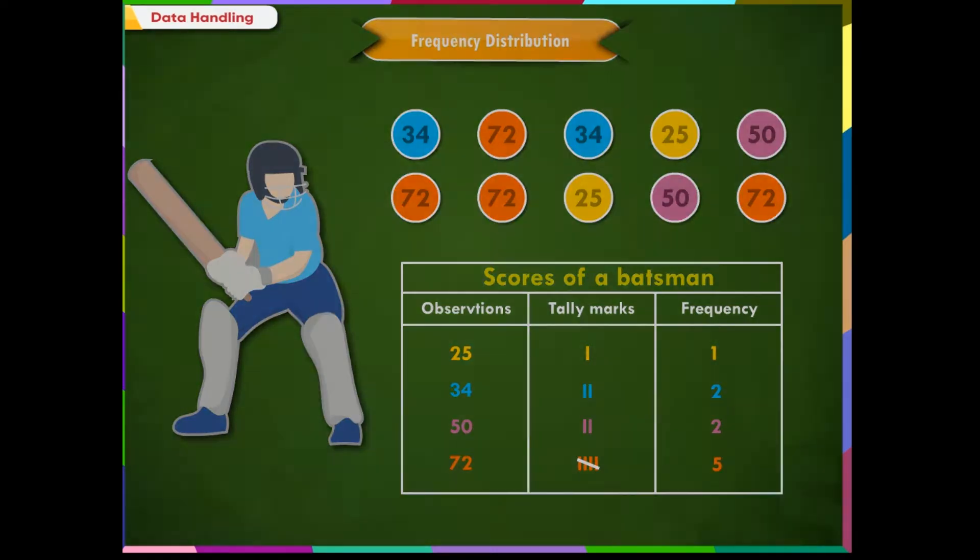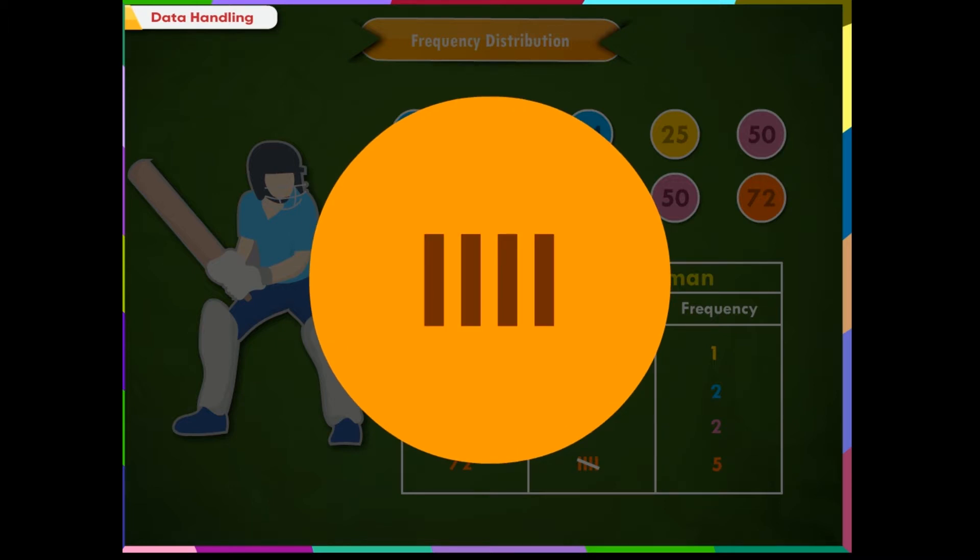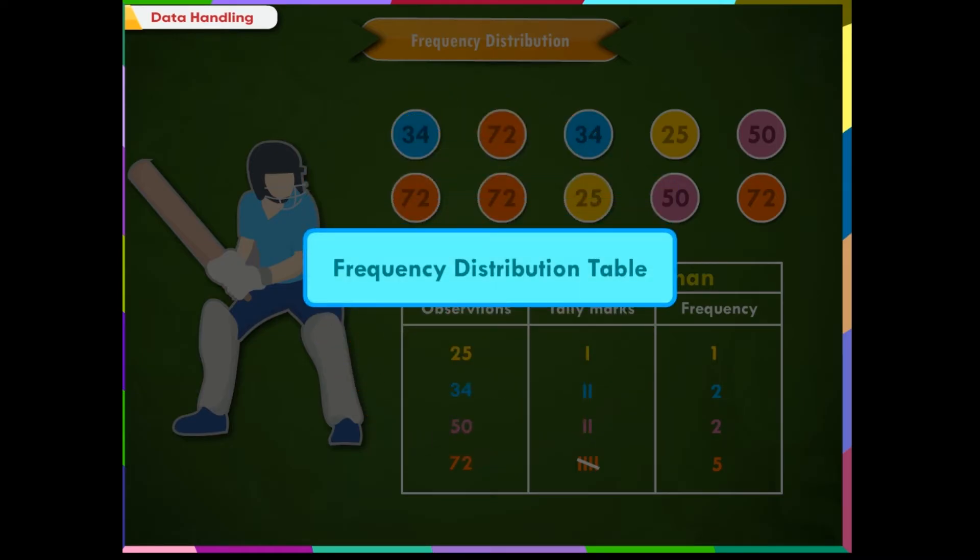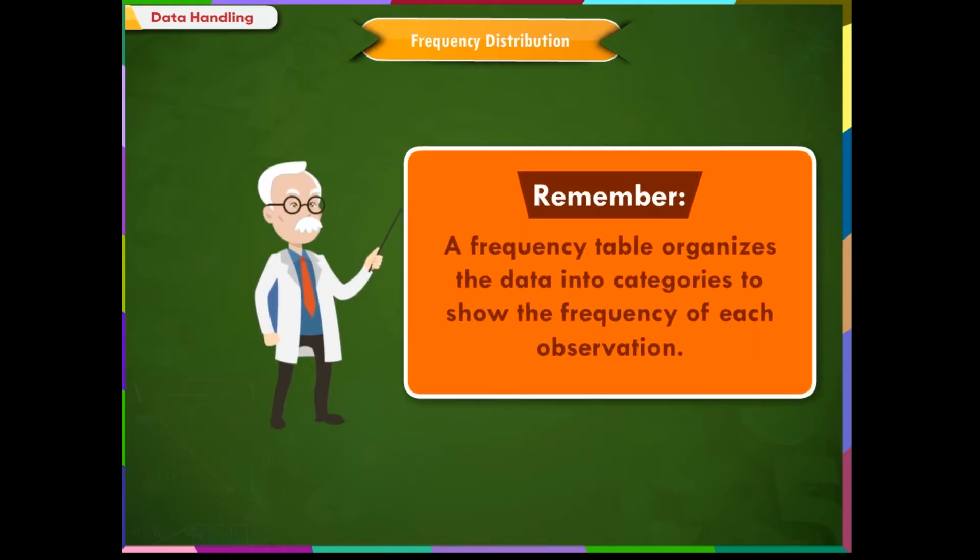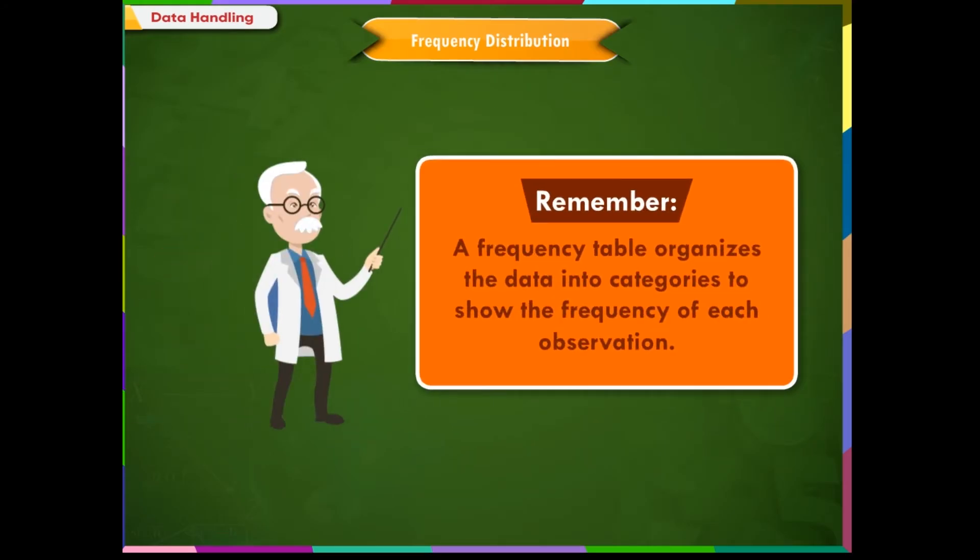Remember, when there are already four tally marks like this and we have to enter the fifth tally mark, then we put a cross line like this and it is counted as five. This is called a frequency distribution table. A frequency table organizes the data into categories to show the frequency of each observation.